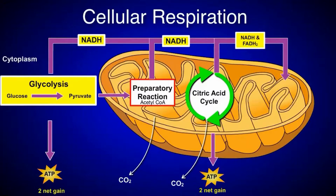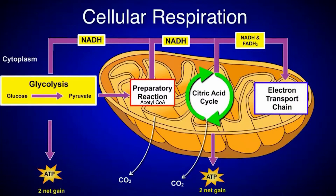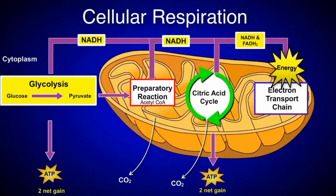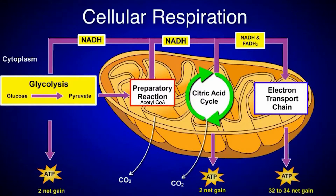Most ATP production occurs in stage four, the electron transport chain or ETC. In this stage, NADH and FADH2 from the previous stage give up electrons to the chain. Energy is released and captured as electrons move from a higher energy to a lower energy state, using a series of proteins embedded in the inner membrane of the mitochondria. This energy is then used for production of ATP, typically 32 to 34 per initial glucose.